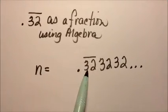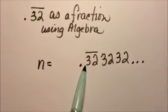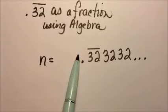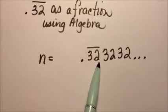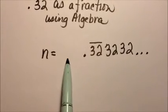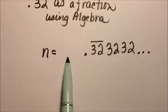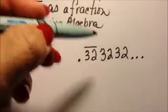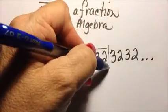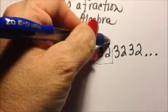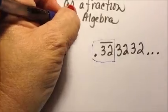Now what would I have to multiply this number by to get the whole pattern on the other side? In other words, I want a whole number here that's equivalent to the part that repeats. So basically what I want to do is I want to have 32 over here.